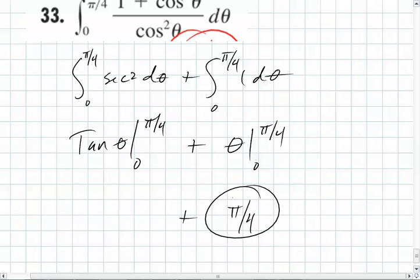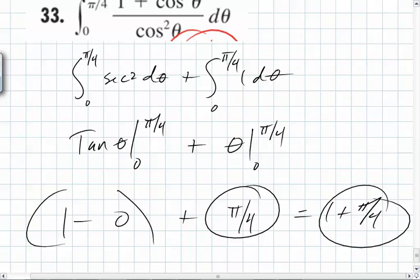But just because the path is easy doesn't mean that seeing the path is easy. Some of the coolest math proofs I've ever seen are seven lines long. But it took the mathematician 10 years to see those seven steps. Some of the most eloquent things are the hardest to figure out. So then what's tangent of pi over 4? It's just 1 minus 0 plus this. So it's 1 plus pi over 4.